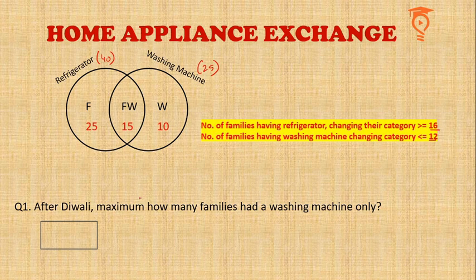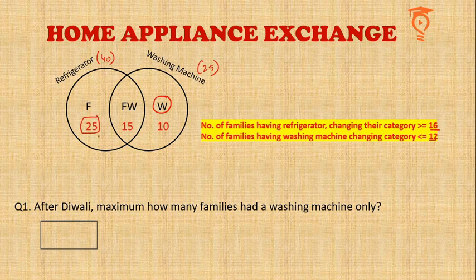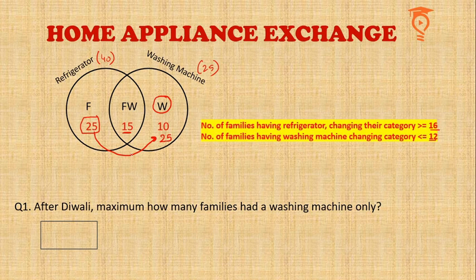The first question is an open-ended question — in CAT they are called TITA questions, where we write the number in a box. After the exchange, what is the maximum number of families that had washing machine only? We have to maximize that number. More than 15 families can shift from the refrigerator circle since there were 40 refrigerator families — even all 40 can shift. So we can shift all 25 from the refrigerator-only category. Those 25 go to washing-machine-only, making it 35. Now the 15 families in the FW region are counted under both refrigerator and washing machine.